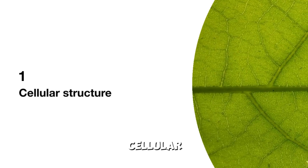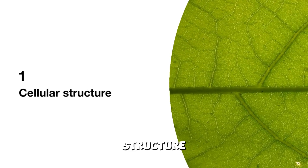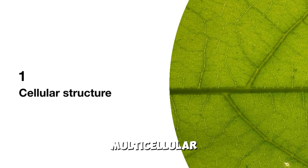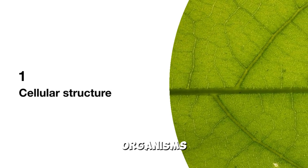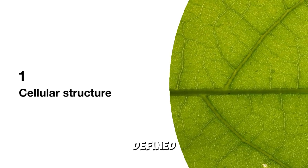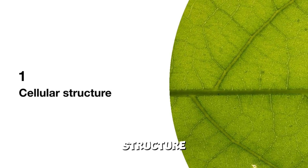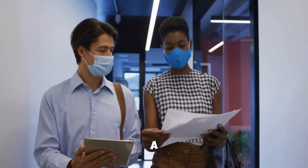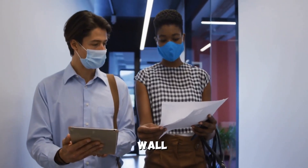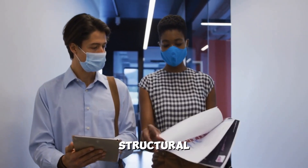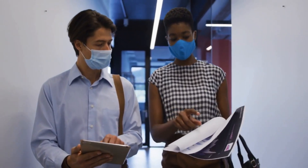1. Cellular Structure: Plants are multicellular organisms with a well-defined cell structure. Their cells have a rigid cell wall, providing structural support.